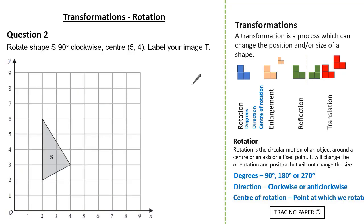So now let's have a look at question 2. Question 2 wants us to rotate shape S 90 degrees clockwise with the centre (5, 4), labelling our new image T. See if you can give it a go and press pause if you need.